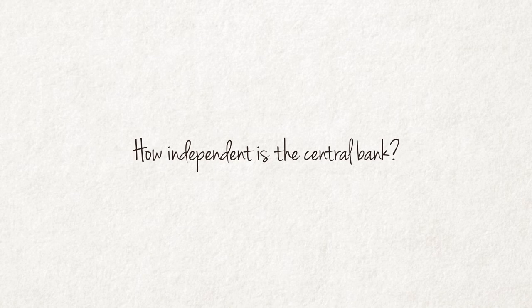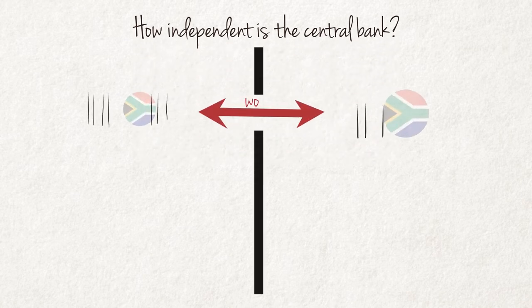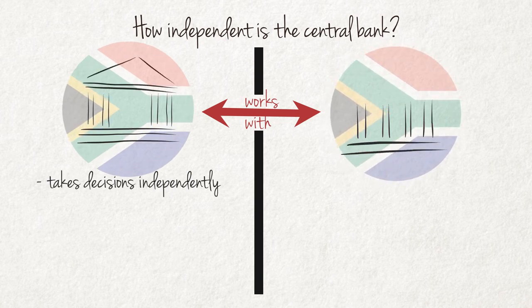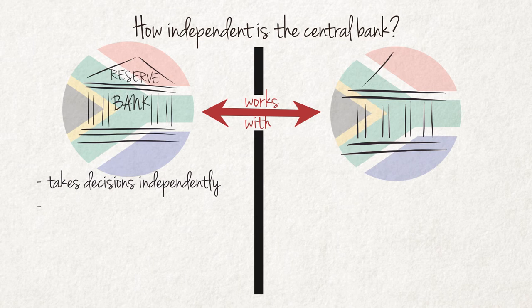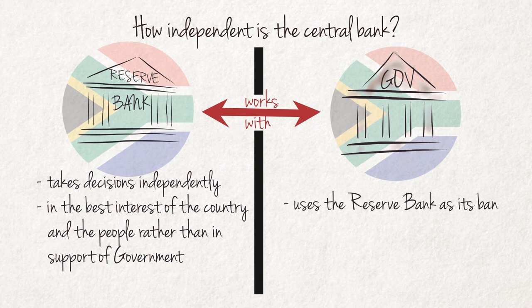How independent is the central bank? The central bank works closely with government but takes its decisions independently from government. This independence ensures that decisions are taken in the best interest of the country as a whole and its entire people, rather than in support of the government. The South African Reserve Bank is also the banker of the central government, which contributes to the special relationship between the central bank and the government.